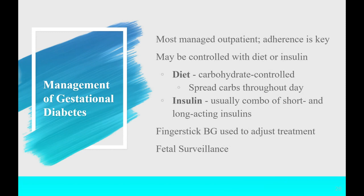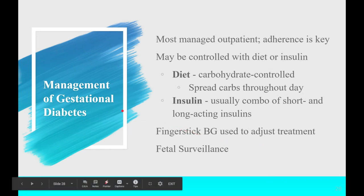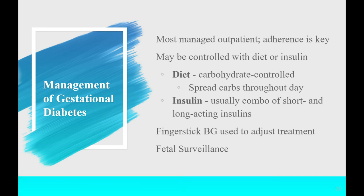However, diabetes in pregnancy is very amenable to treatment. With tight glucose control, we can achieve good outcomes — unlike preeclampsia where we have little control. Gestational and pre-gestational diabetes can be managed outpatient. The key is patient adherence. There are two categories of treatment: diet and insulin. Diet is carbohydrate-controlled — carbs are spread throughout the day in a typical pattern of three meals and three snacks, with a controlled number of carbohydrates in each.